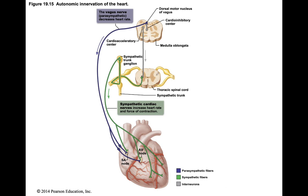The examples I want to give you are one parasympathetic and one sympathetic. The parasympathetic nerve comes directly from the brain and it's called the vagus nerve. The vagus nerve innervates the SA node and the AV node and it slows down the heart. The sympathetic goes from the brain to the spinal cord, through the sympathetic trunk, and innervates the SA node, the AV node, and the muscles to tell the heart to beat faster. Know the names vagus nerve and sympathetic cardiac nerve, where they innervate the heart, and the effect they have.